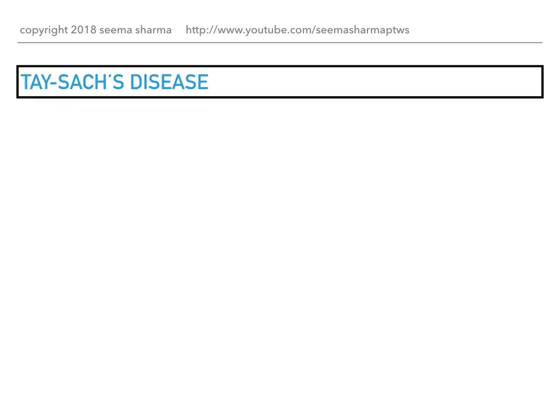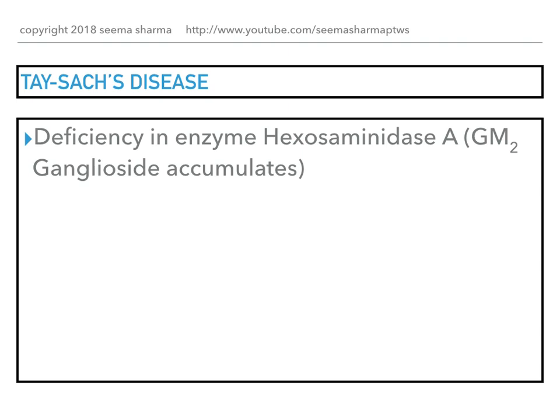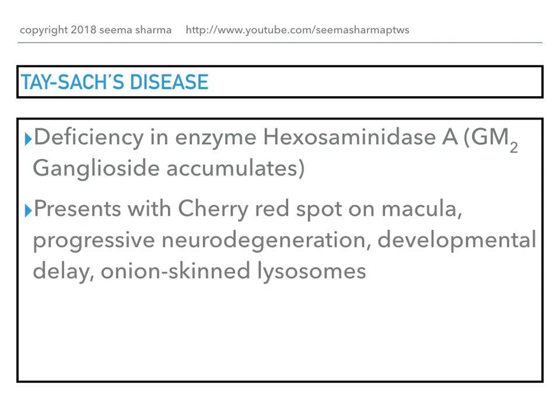Tay-Sachs disease is caused by deficiency in the enzyme hexosaminidase A, and GM2 ganglioside accumulates. The clinical presentation is a cherry red spot on the macula, progressive neurodegeneration, developmental delay, and onion skin-appearing lysosomes.